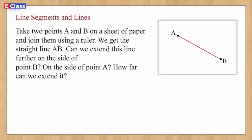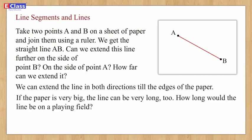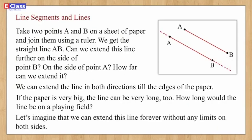Line segments and lines: take two points A and B on a sheet of paper and join them using a ruler. We get the straight line AB. Can we extend this line further on the side of point B or on the side of point A? How far can we extend it? We can extend the line in both directions till the edges of the paper. If the paper is very big, the line can be very long too.